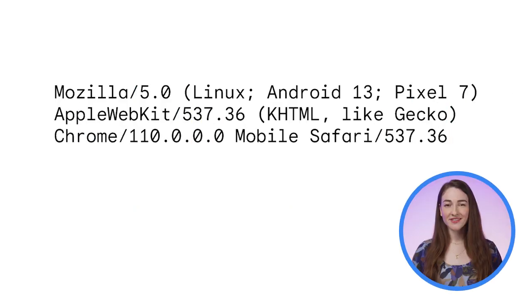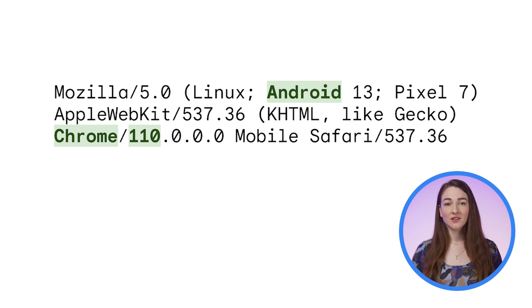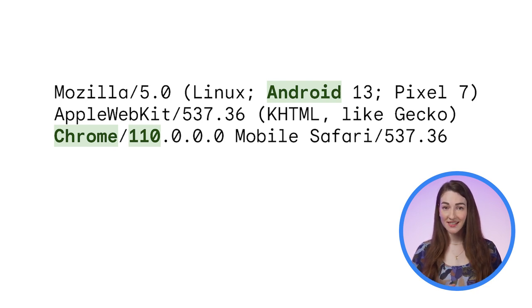The user agent is a string that provides information about the user's browser and their environment — for example, knowing a visitor to your site is using Chrome 110 on Android. Your browser sends this information in an HTTP header and makes it available via JavaScript. The problem with the full user agent string is that it shares detailed information about the browser by default on every request, which is a major factor in enabling cross-site tracking.